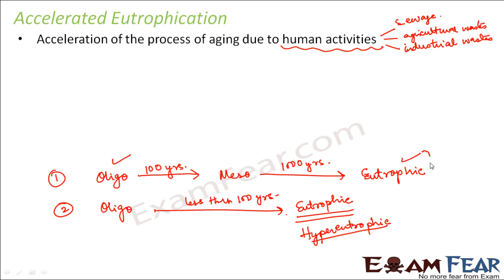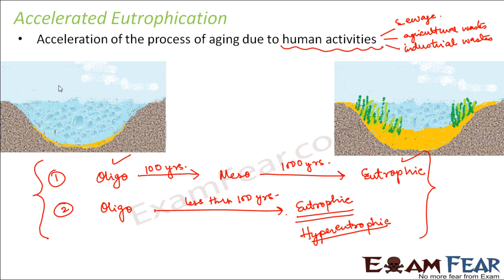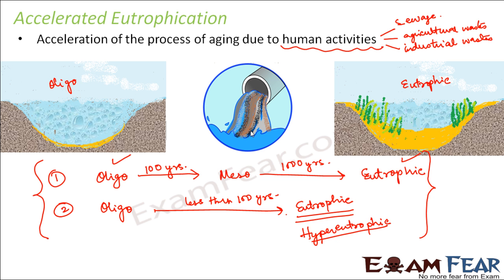This is a scenario which arises due to human activities, which include disposal of wastes into the lakes. The lake goes from oligotrophic and directly becomes eutrophic or even hyper-eutrophic due to disposal of wastes rich in nutrients like nitrates and phosphates. Because of these nutrients, too many plants tend to grow, primary productivity increases, and therefore the depth of the lake reduces. This is how accelerated eutrophication takes place.